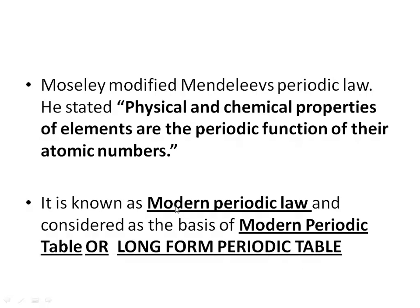To compare the two laws: Mendeleev's periodic law states that physical and chemical properties of elements are periodic functions of their atomic masses, whereas the modern periodic law is based upon their atomic number. The modern periodic table arranges elements in increasing order of atomic numbers, and when arranged this way, the physical and chemical properties of elements repeat after certain intervals of time.